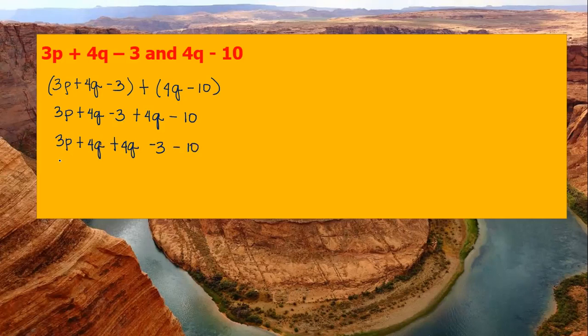Then add 3p, then 4q plus 4q is equal to 8q. And then negative 3 minus 10 is equal to negative 13. So the answer is 3p plus 8q minus 13.